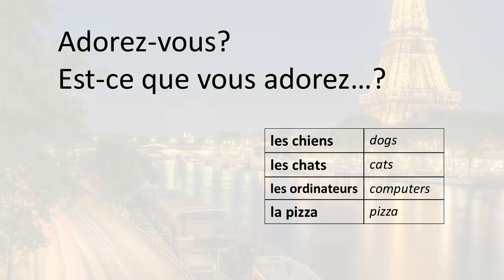So two ways of asking do you really like in French. Do you really like dogs? You could say adorez-vous les chiens, or est-ce que vous adorez les chiens? Do you really like cats? Adorez-vous les chats, or est-ce que vous adorez les chats? Do you really like computers? Adorez-vous les ordinateurs, or est-ce que vous adorez les ordinateurs? Do you really like pizza? Adorez-vous la pizza, or est-ce que vous adorez la pizza?